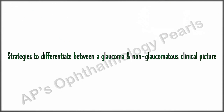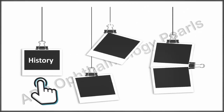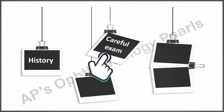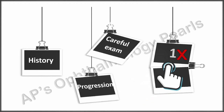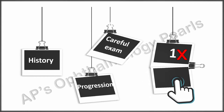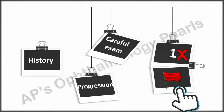Some strategies to help differentiate glaucoma from mimics: take a detailed history, especially regarding onset, progression, and family history; perform a careful examination with an open mind; note the rapidity of progression; do not rely on a single piece of information or investigative modality; and always look for the red flags discussed previously.